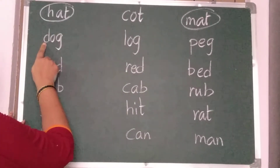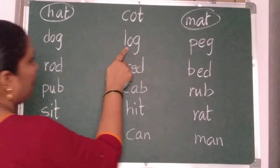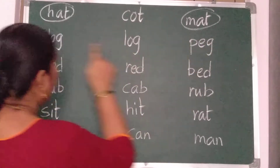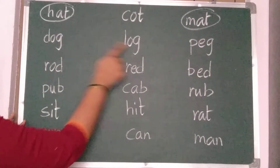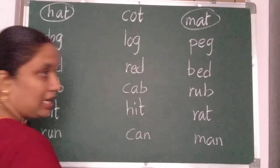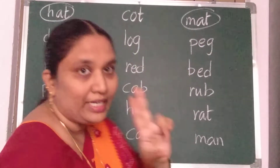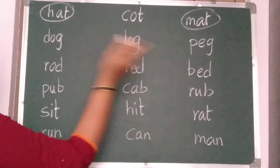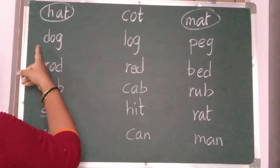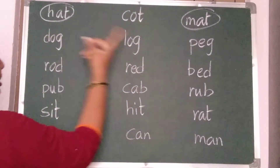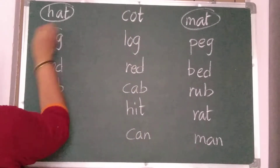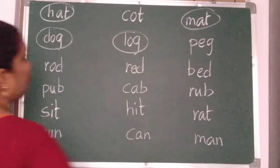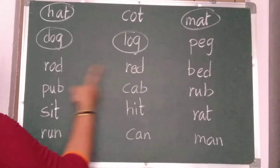D, O, G — dog. L, O, G — log. P, E, G — peg. The last two letters O, G and O, G are the same, making the same sound. Dog, log — so you should circle these two words.